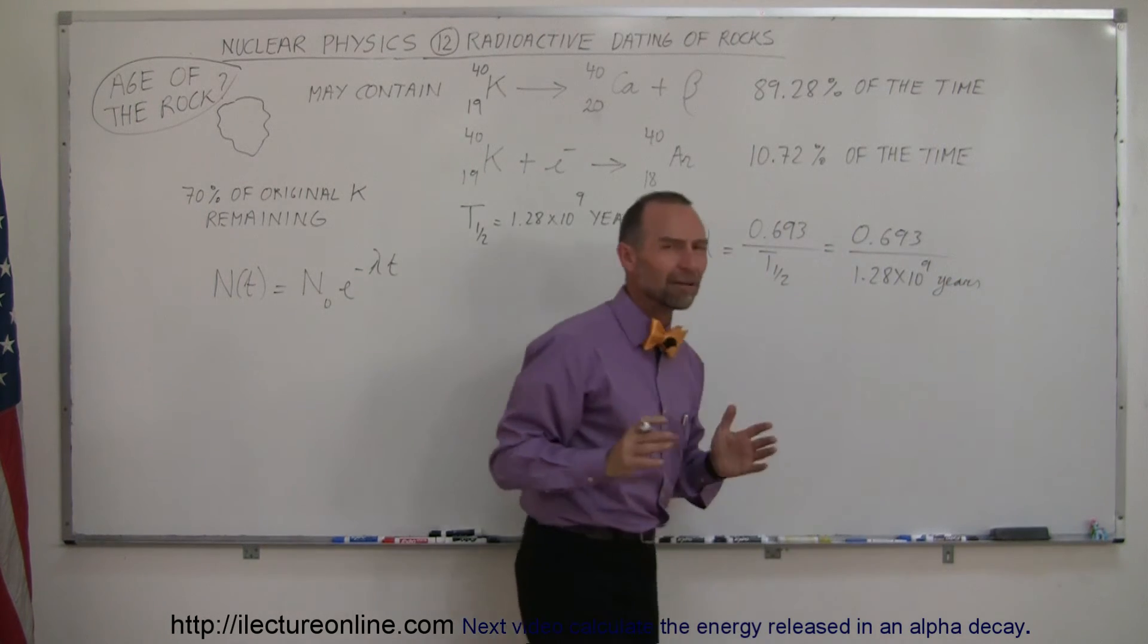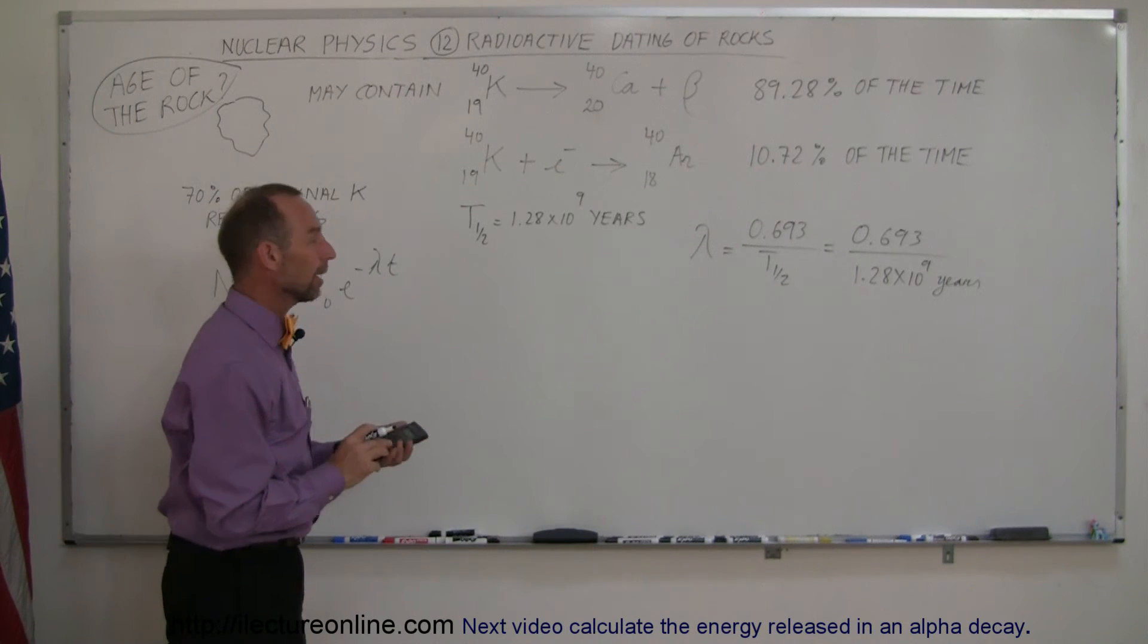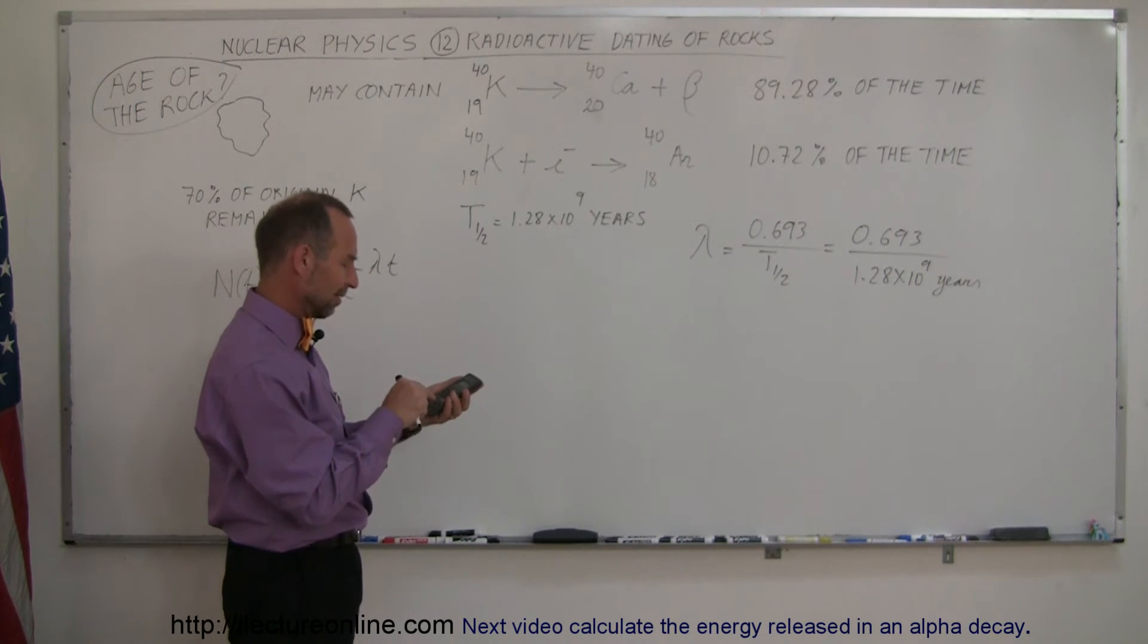Okay, so that's a very long half-life, so we can expect to find a very small decay constant. So 0.693 divided by 1.28 e to the 9 equals,